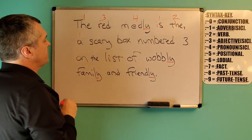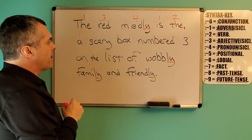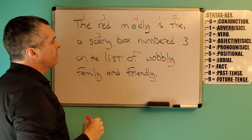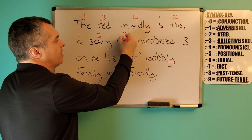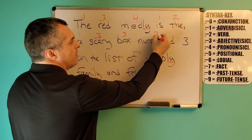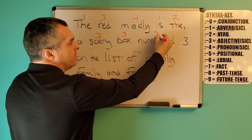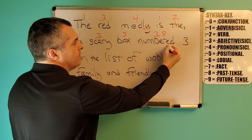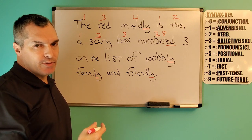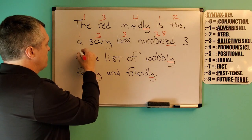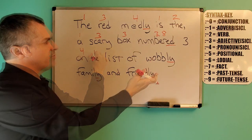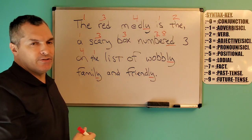Then we have non-tangible contract adverb modifying tangible contract 'scary' into an adjective, which is coloring tangible contract 'box' into an adjective, which is coloring tangible contract 'numbered' into an adjective in the past tense. And now we have a number here. I've seen people come in and continue syntaxing as though numbers don't need to be addressed.